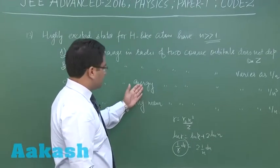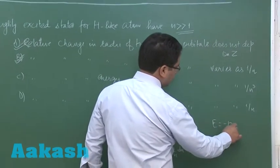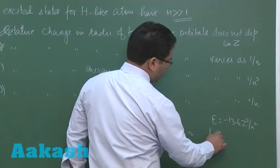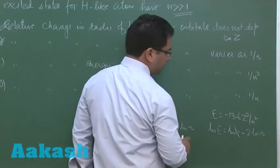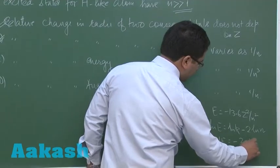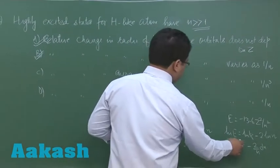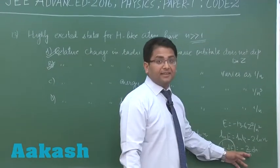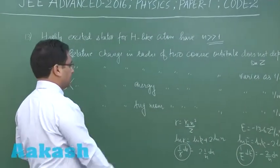Now let's talk with the energy. When you talk with energy you see that energy is minus 13.6 Z square by n square or log e would be log k minus 2 log n. And 1 by e d e would be minus 2 by n d n. Now you could see that the relative change in energy is inversely proportional to n. While the question says inversely proportional to n cube so that would be incorrect.